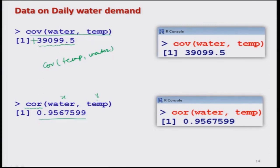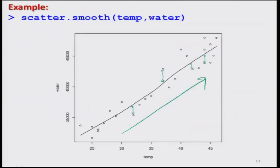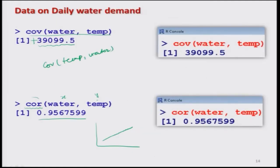We find the correlation using COR between water as x and temperature as y. This correlation comes out to be 0.95. This means the relationship is increasing and the quantitative measure of the degree of linear relationship is 0.95. Had all the points been lying exactly on the same line, the correlation coefficient would have been 1 — but that is not practically feasible in real life. The deviation of the points from the line is now quantified by the correlation coefficient.